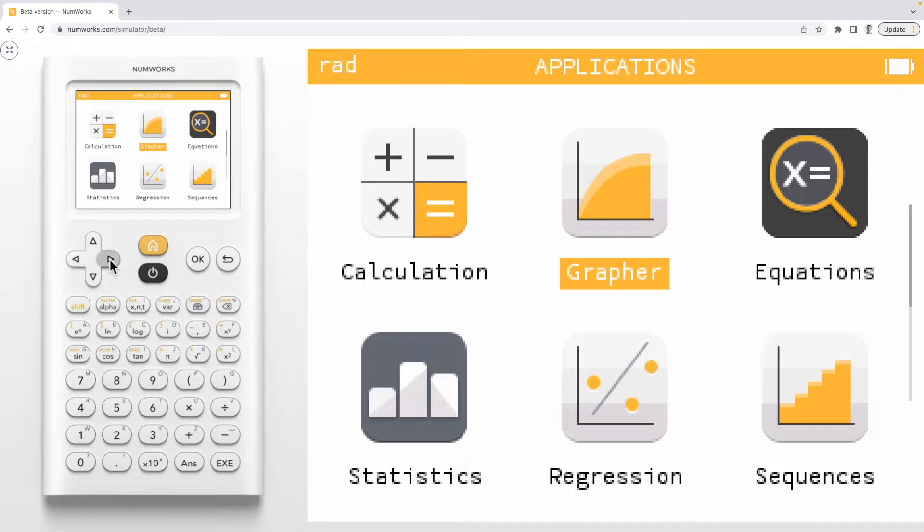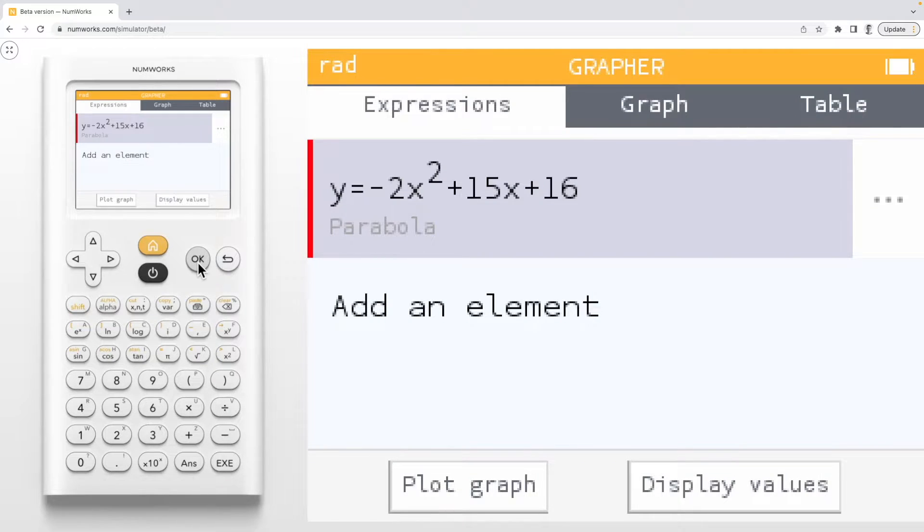To begin, enter the grapher application. I already have the quadratic equation y equals negative 2x squared plus 15x plus 16 entered into the expression tab.